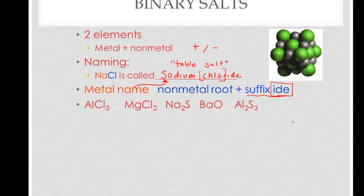So when you look at some of these compounds, the important thing is this is all you are going to do. The fact that there are subscripts is not going to be found in the name. For example, this first one is simply aluminum chloride, and we have magnesium chloride, sodium sulfide, barium oxide, and aluminum sulfide.